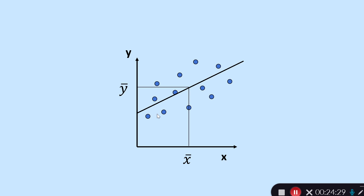This plot illustrates the process: we have our x-y axes with data and a fitted line. The horizontal dashed line shows the mean of y, and the vertical line shows the mean of x. The point where those two means meet is where we pivot the line until we find the position that minimizes the sum of squares. That's essentially how regression works — fitting lines to data.